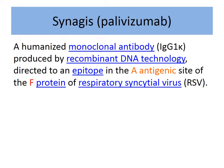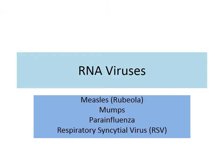This antibody is called Synagis. Today I'm going to talk about at least four different viruses. Most of you will be familiar with the childhood vaccination called MMR — measles, mumps, and rubella. Don't confuse rubella with rubeola; rubeola is measles.